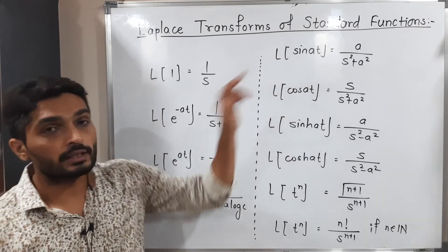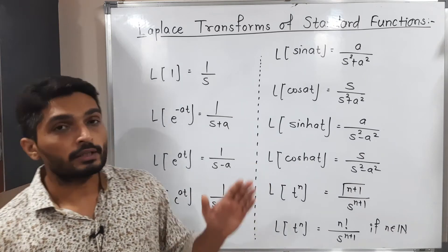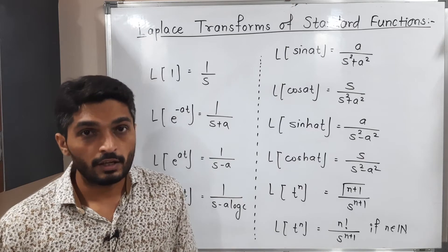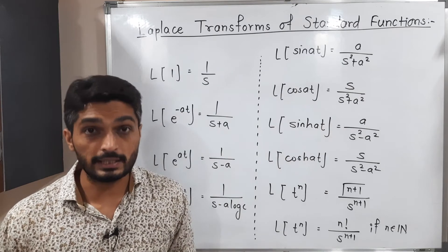The next one is very important: Laplace of sin(at). It is a/(s² + a²) where t is a variable and a is a constant. When we have cos(at) we have the same denominator, simply we change the numerator which is s.